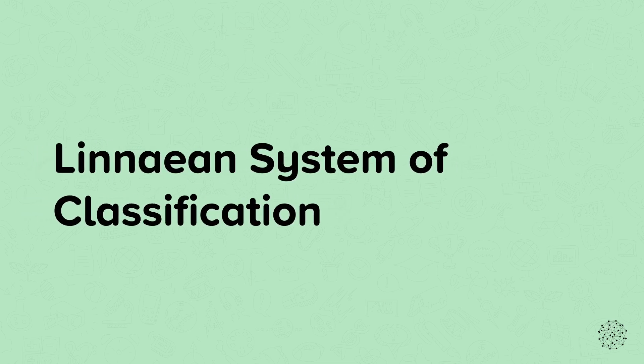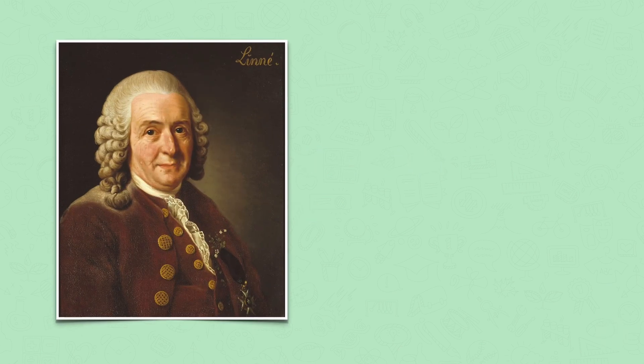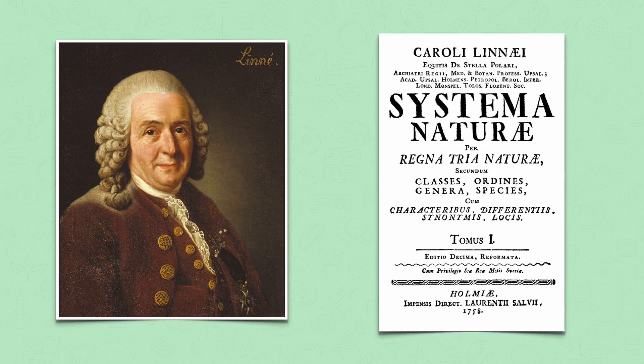In this nugget we will look at the Linnaean system of classification. Karl Linnaeus was a Swedish botanist, zoologist and physician who published a manuscript that introduced a system of classifying organisms by their structures. He is considered to be the father of taxonomy, which is the classification and naming of organisms.